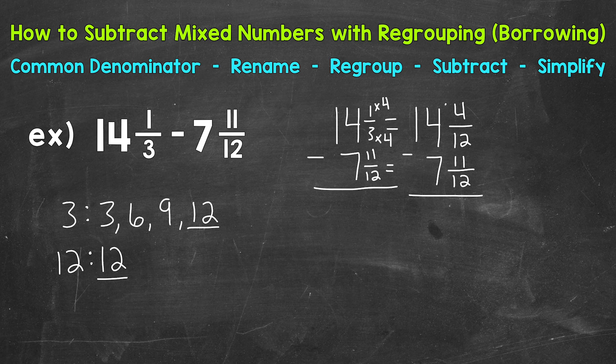So let's cross the 14 out and it's now going to be 13. We need to give one whole to the 4/12. Now we're going to do that in fractional form. So plus one whole and we're going to use 12 over 12.